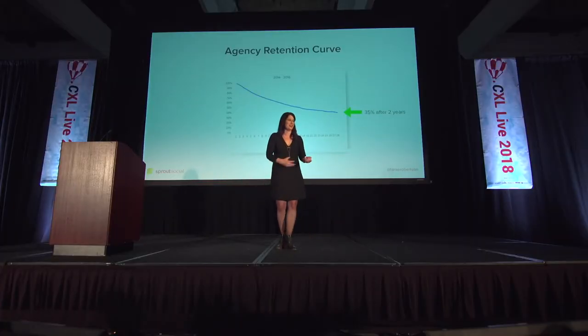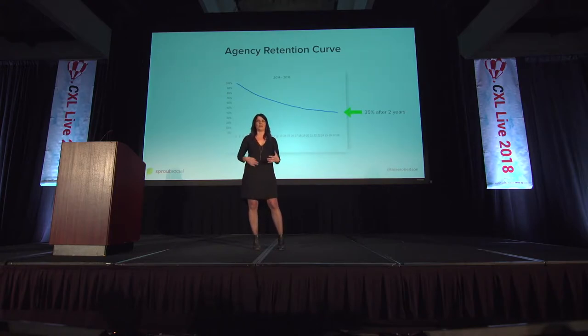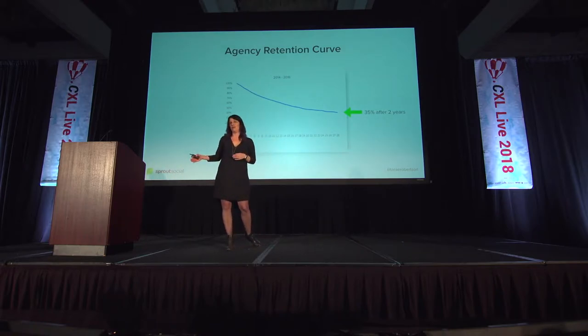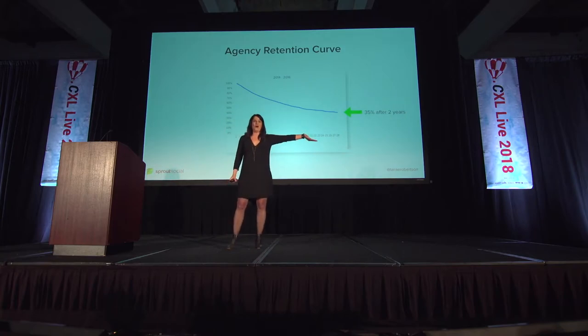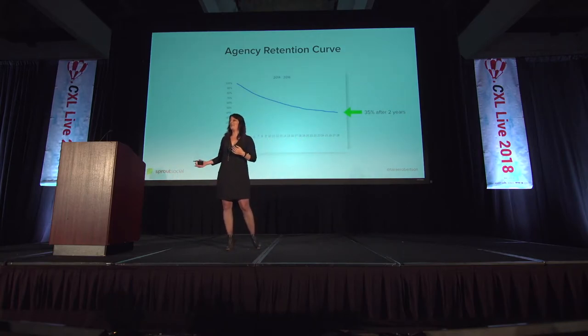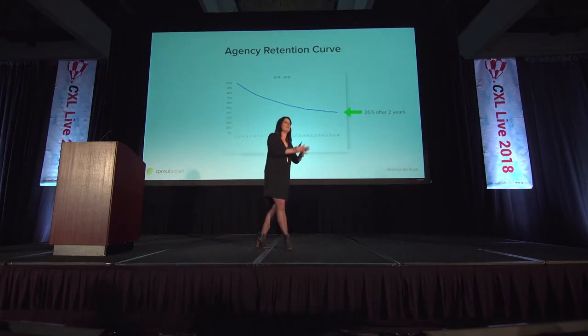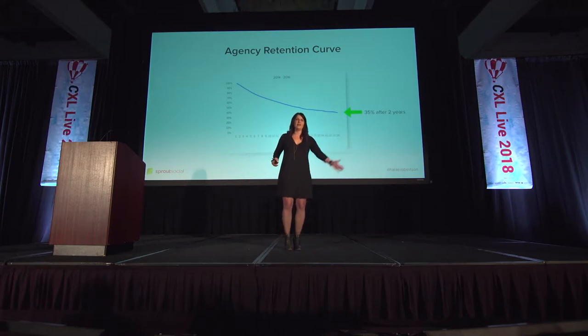Our journey to 10x started with our agency retention curve. When I first joined, we ran data to look at what our agencies looked like. We knew we had that 2.8% number, but we wanted to dig deeper. We saw the curve going down — it did start to flatten out a little bit, but after two and a half years we were only keeping 35% of our agency customers, which was crazy. So we knew we had a problem. The first question was: why are they leaving us?